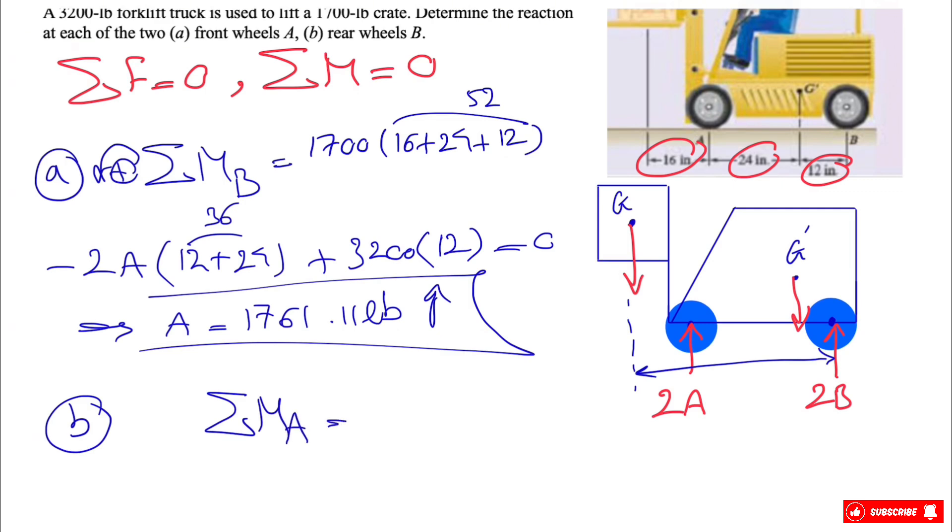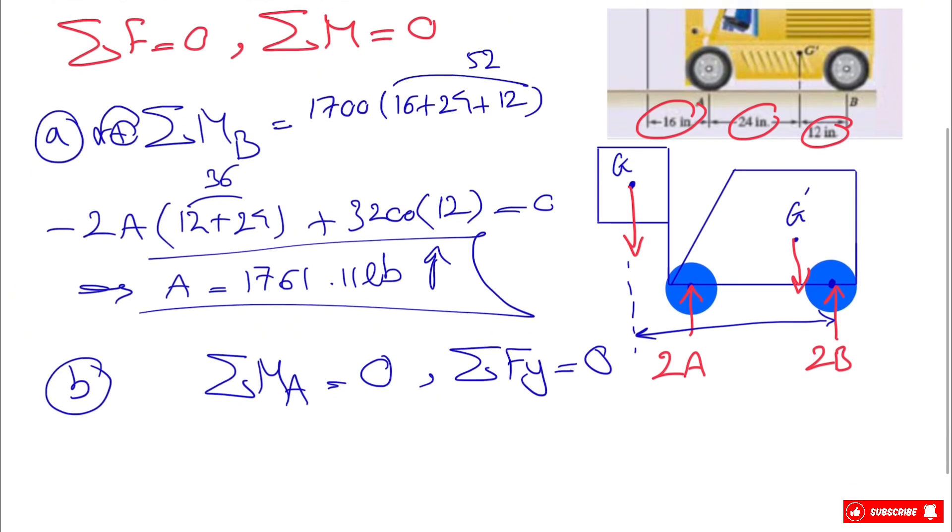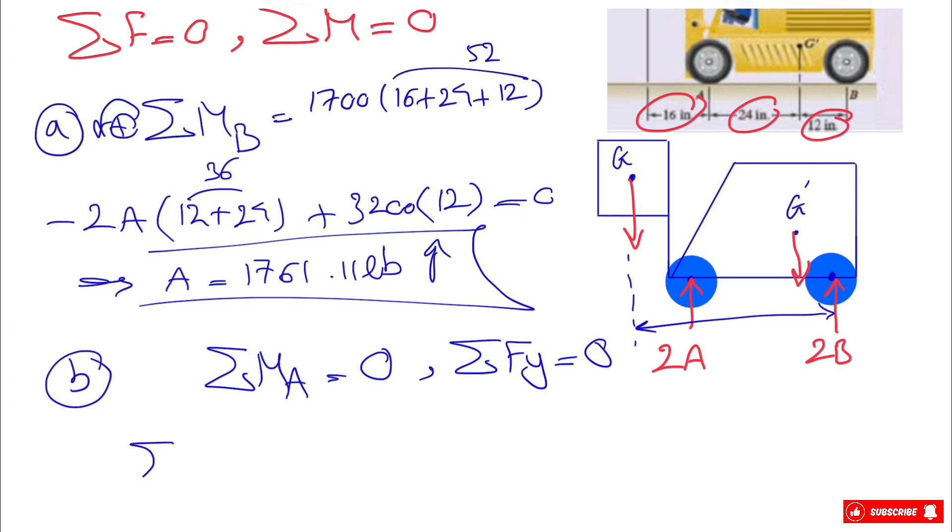We can cancel out the unknown A, or the other way is going with the sum of all forces in Y direction. Each of these two works well. Let's go with the sum of all forces in Y direction, and this will be our positive direction for Y.